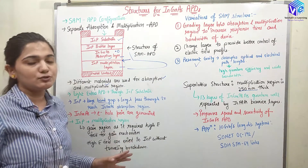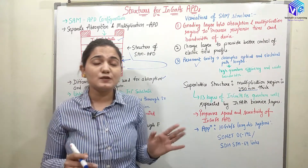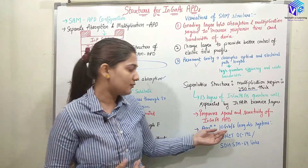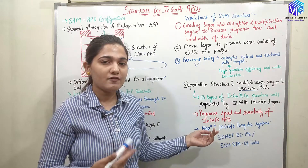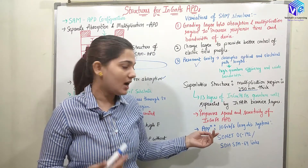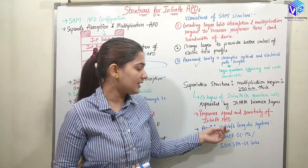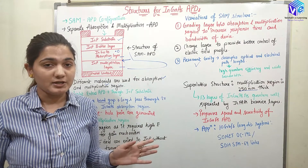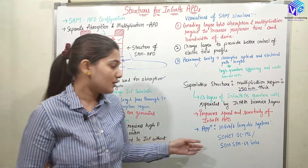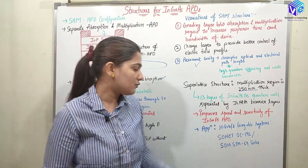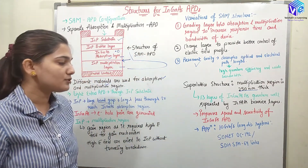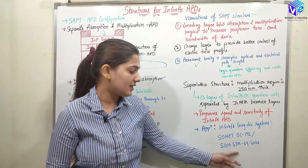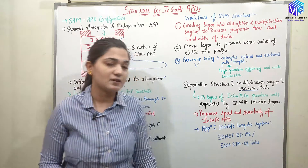Coming to the application, the super lattice structure is used in long distance communication. It gives very high speed like 10 Gbps for long distance communication and can be used in SONET OC-192 and SDH STM-64 links.